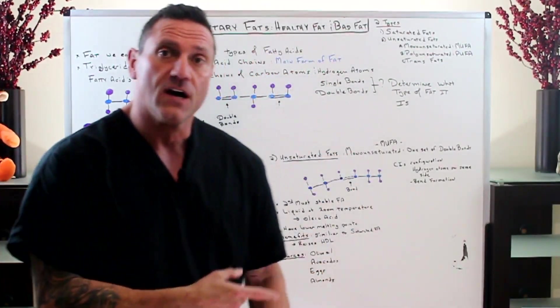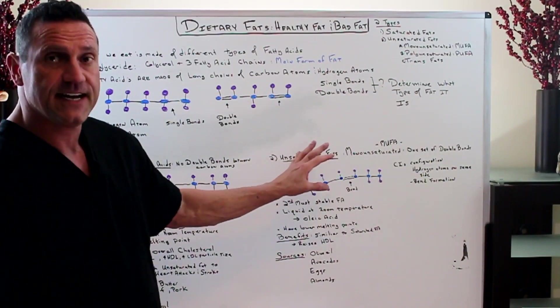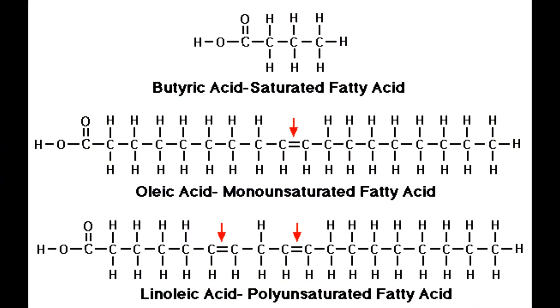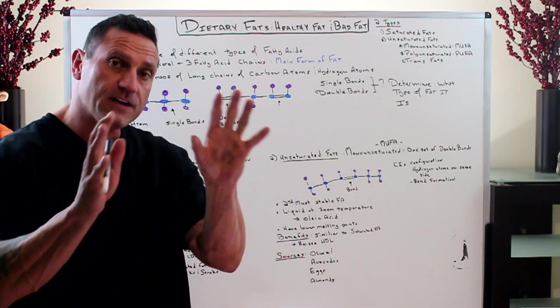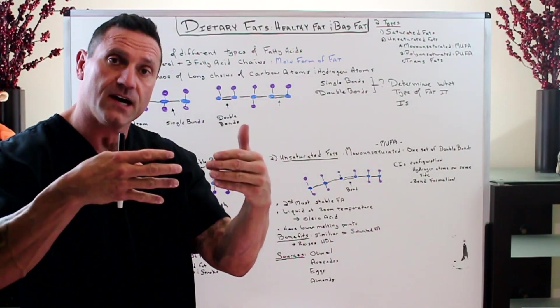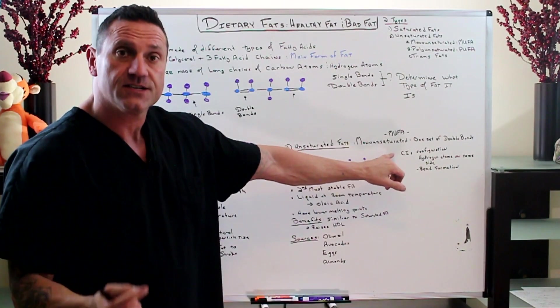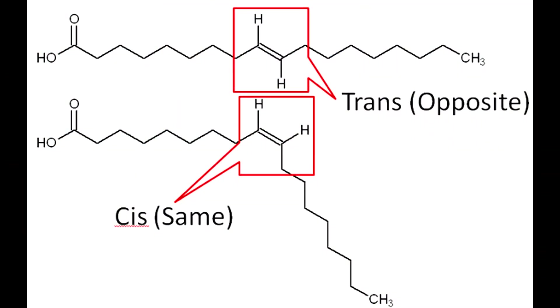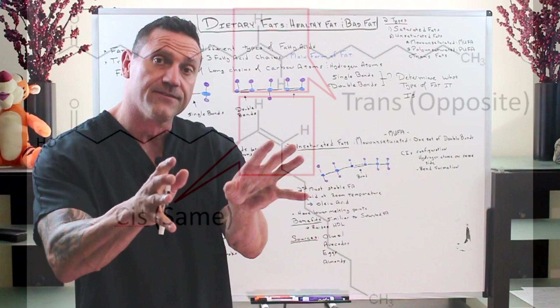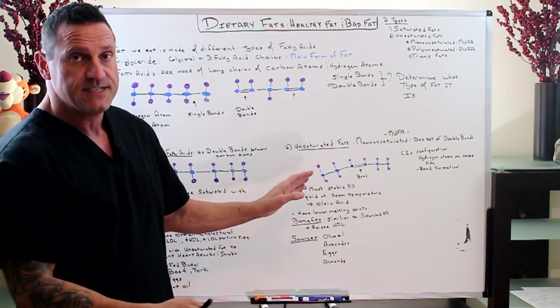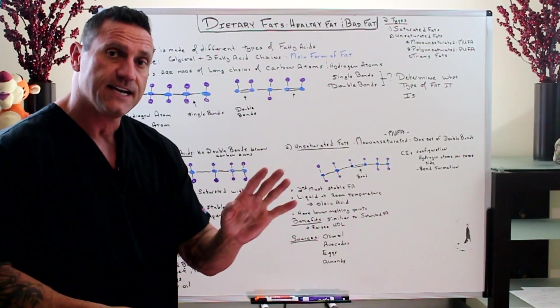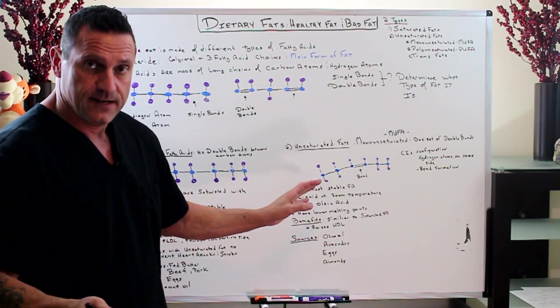Next, let's go over to unsaturated fatty acids. The monounsaturated fatty acid has one set of double bonds, MUFA for short. There are different configurations depending on where the double bond is. Is it in a kink formation? This is your cis. Cis, the hydrogen atoms are on the same side and they have a bent formation. This is the second most stable. The first most stable is the saturated. The second most stable is the monounsaturated fatty acid.